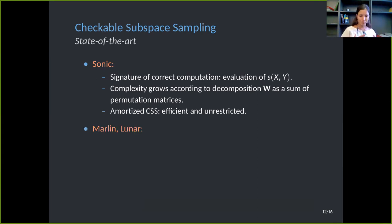In Marlin and Lunar, they use a very smart encoding of sparse matrices that is presented in Marlin, which is again a fair assumption because what they assume is that the amount of non-zero elements is actually linear in the size of the circuit. And the protocols are super efficient, but they have quite a large SRS.